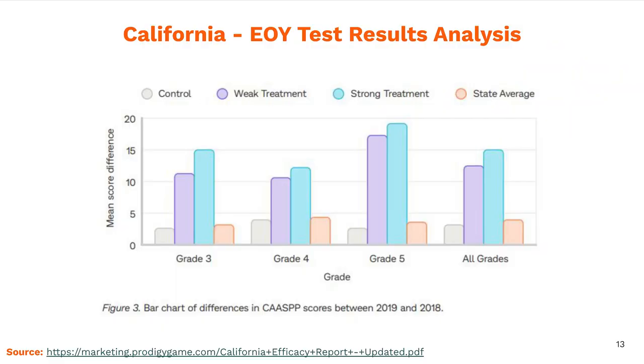Now I want to cover some results from a study that we did. This is a correlational study where we looked at California students — some who used Prodigy somewhat, some who used it a lot, and some who didn't use it at all. You can see there's quite a stark difference between those who used it even a little bit compared to the control group of students who didn't. We can see the more they used Prodigy, the stronger their achievement was. So it really correlates nicely and we were excited to have those findings.